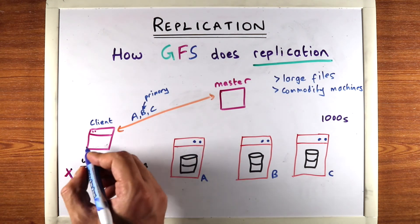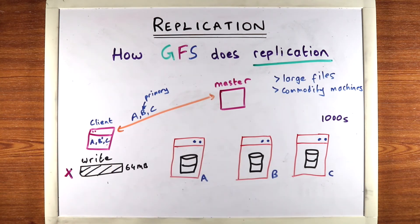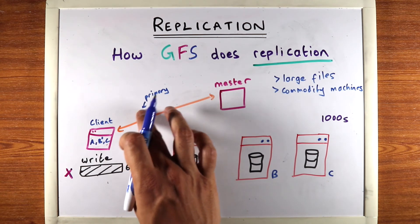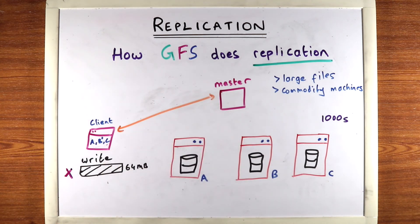So at this point, the client says, okay, I'm gonna store these three machines so that I know where I'm gonna write from now on. So I don't need to contact the master again. So at this point, the client is done interacting with the master.